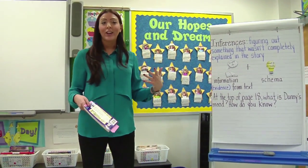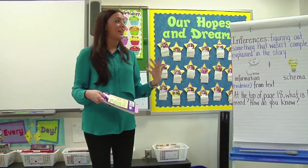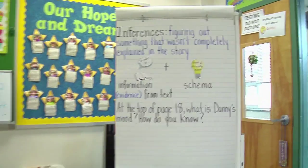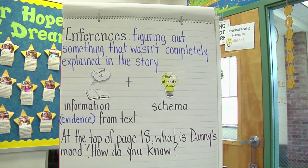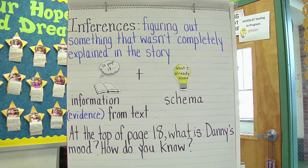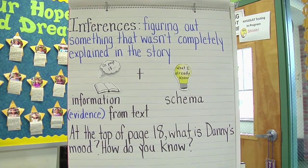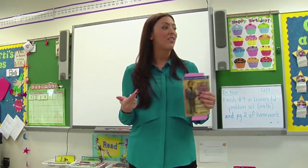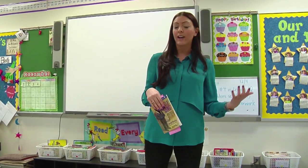Today you're going to be making inferences. An inference is when you figure out something that wasn't completely explained in the story — you really become a reading detective. The two things you need in order to make an inference are information from the text, and we call that evidence.